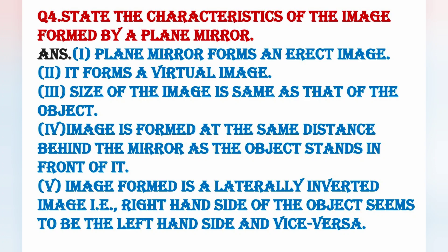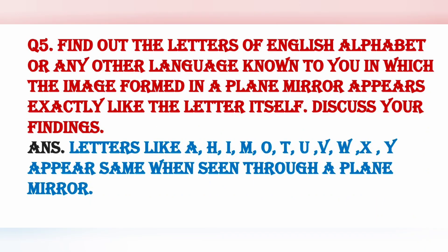Fifth, joh plain mirror image form karta hai, woh laterally inverted hoti hai — means humara jo right hota hai, woh hume image mein left show hota hai, aur jo humara left hota hai, woh image mein right show hota hai. Next question: find out the letters of the English alphabet in which the image formed in a plain mirror appears exactly like the letter itself. Such letters are: A, H, I, M, O, T, U, V, W, X, Y — ye letters plain mirror mein bhi waise ki waise hi dikhti hain jaise hume book mein dikhayi deti hain.